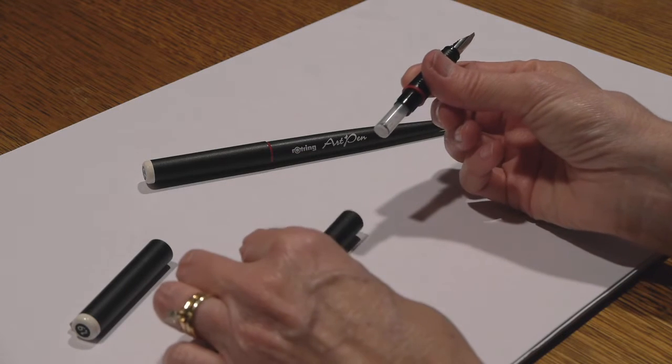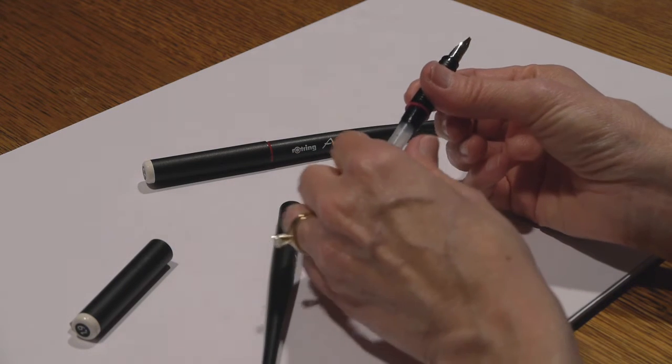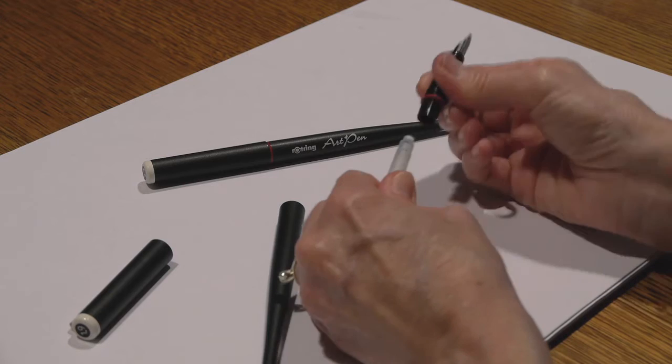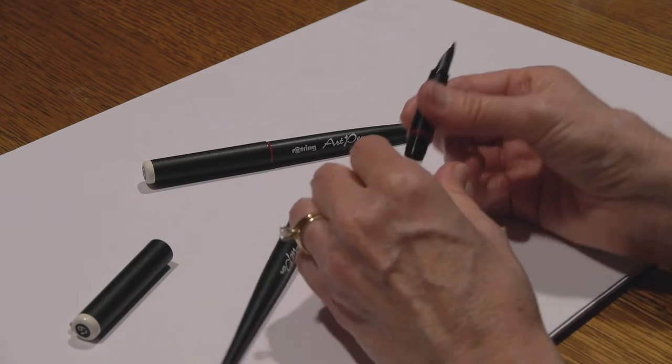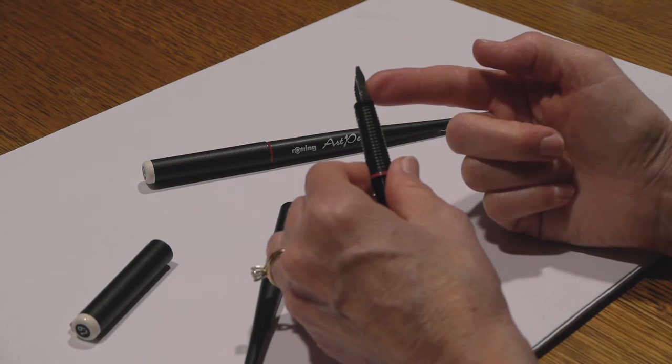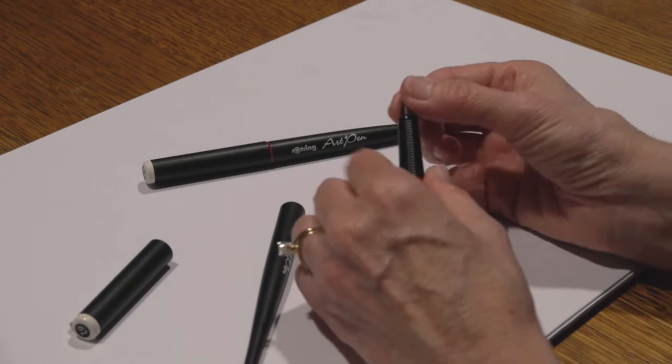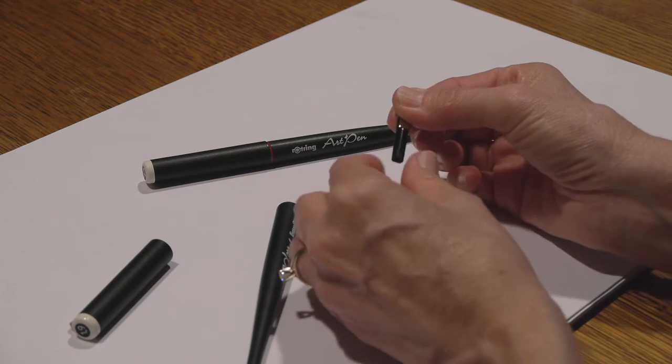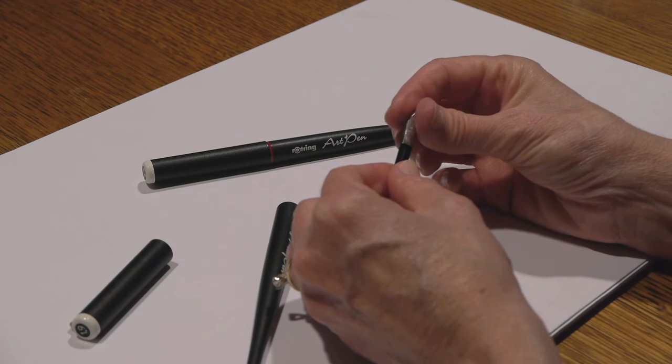The ink cartridge is pushed in, so just pull it straight out, and then the nib is pulled out. It doesn't screw out. You pull it straight out, and it is actually in two pieces as well.